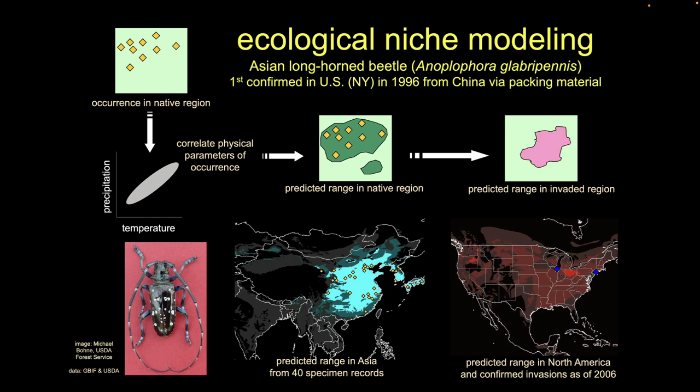Then we can take those habitat conditions and apply them to the new area — a potential invasion in the US. If we assume these are where the critter can live back in China, this is where it can live over here. So now we can begin to say, this is maybe where they're most likely to get a foothold. The next step is to ask: what might this invader do to the other species? To answer that, we need to understand the community — the other organisms in the area and what they do. And so for that, we need to start looking at diversity.